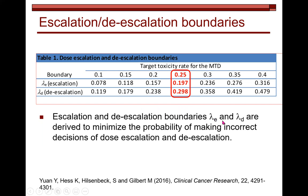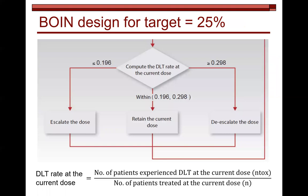These two boundaries are derived to minimize the probability of making incorrect decisions — meaning incorrect dose escalation or de-escalation. There is a target function to minimize the incorrect decision rate, and these two boundaries achieve that minimization. This represents a personalized treatment option for phase 1 dose-finding trials. If the target is 25%, we can produce this flowchart for your protocol and use it throughout the trial.